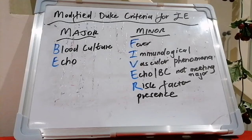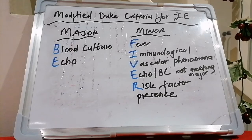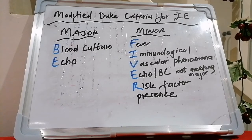If the patient is penicillin-sensitive and not allergic, we use ampicillin or amoxicillin 2 grams orally or IV as a single dose given 30 to 60 minutes before the procedure. If the patient is allergic to penicillin, opt for clindamycin 600 milligrams IV as a single dose 30 to 60 minutes before the procedure.